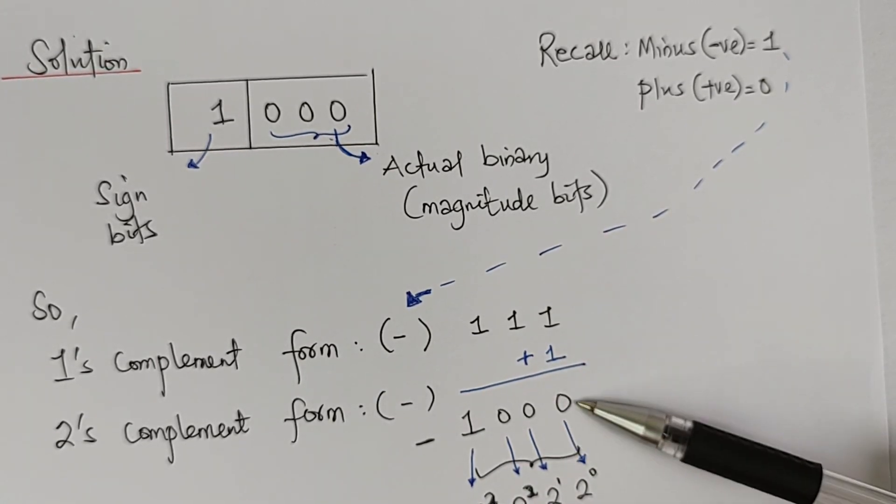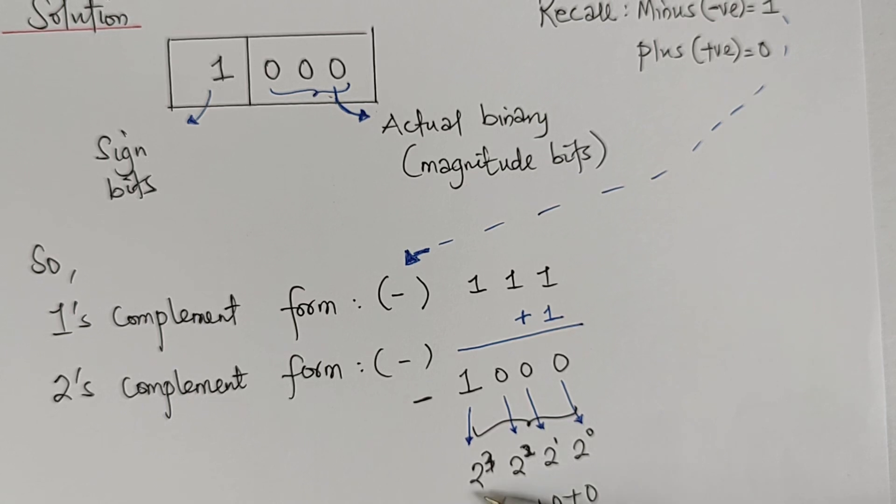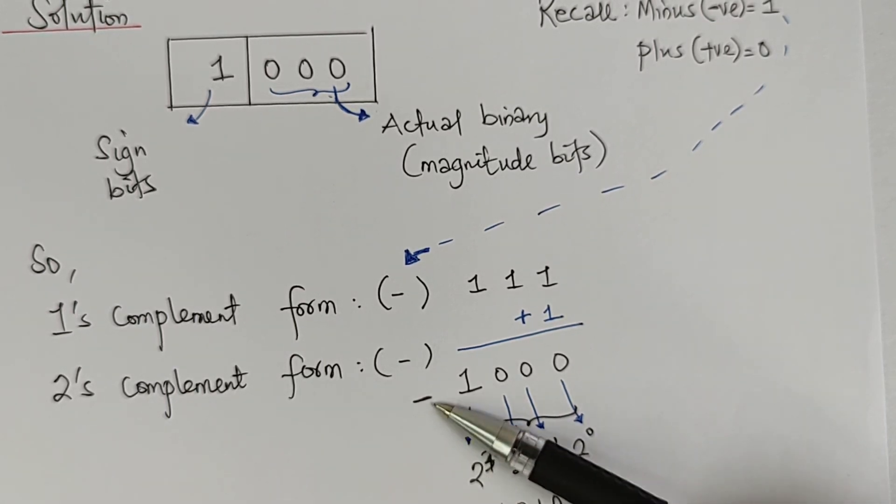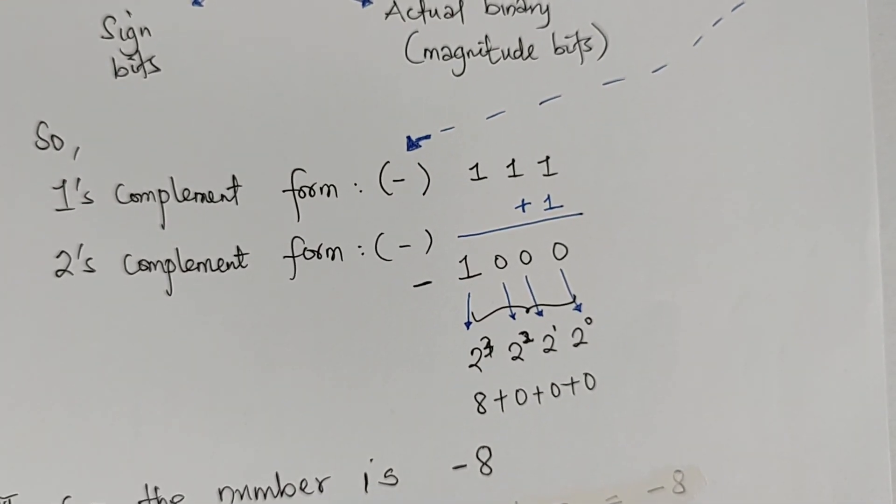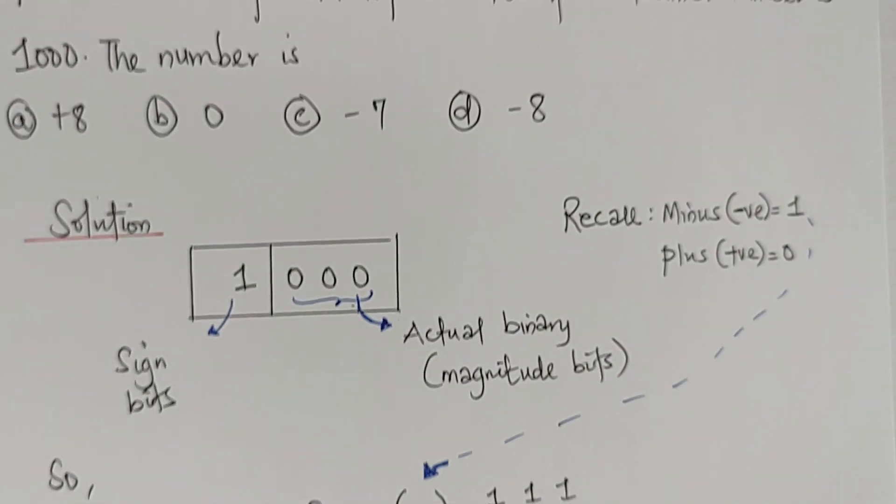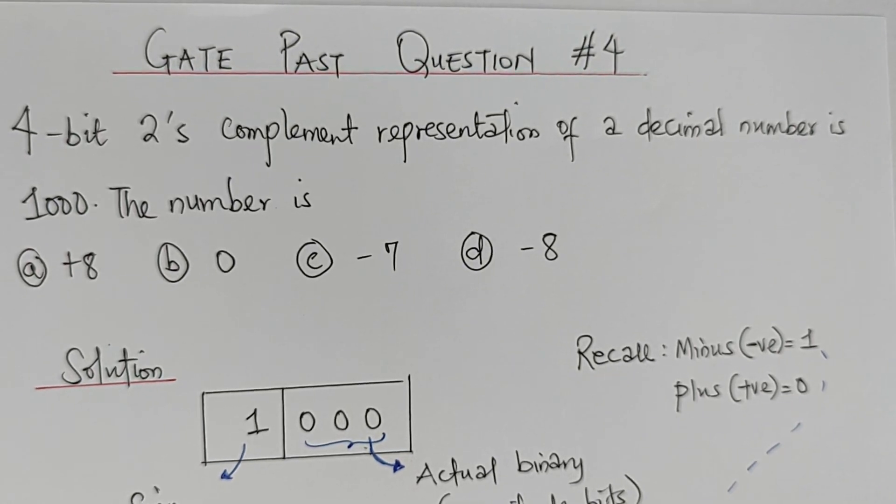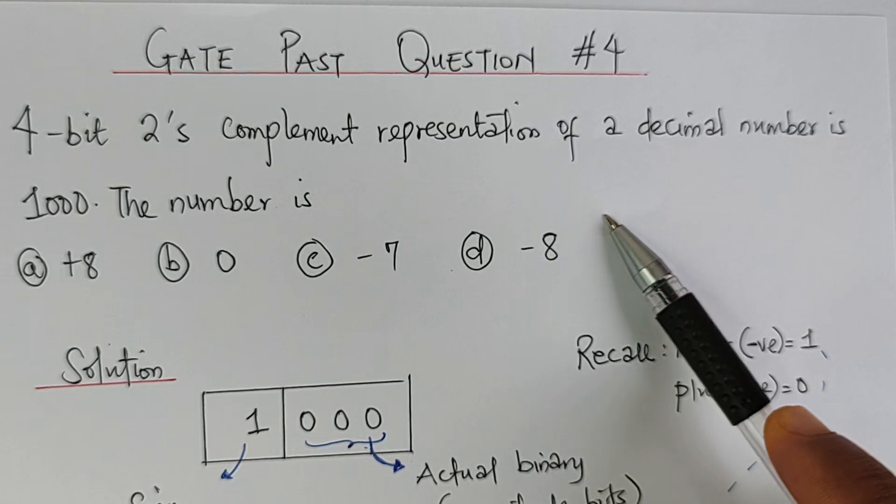Remember, anything that multiplies with 0 is actually 0, so we are not going to use that. We just have 2 raised to the power of 3 times 1, which is 8. Remember the sign is actually a negative sign. Therefore, the number is minus 8. We can see here that the option is D. So you just come here to take D during the exam day.